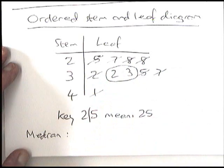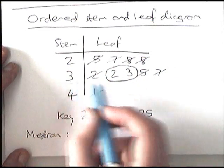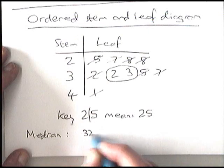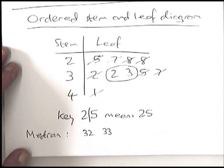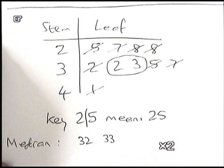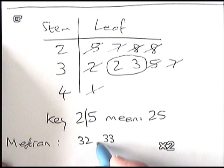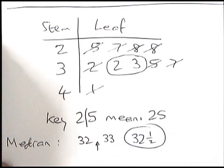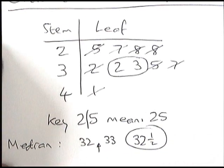After crossing off we're left with two values in the middle: 32 and 33. The median can't be two values, so when you have two middle values you write down what's exactly in the middle of them — that would be 32.5 or 32 and a half. That's the median, and that's basically how you do a standard stem and leaf diagram.